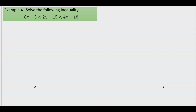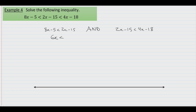Example number 4: solve the following inequality — 8x minus 5 is less than 2x minus 15, which is less than 4x minus 18. The value of x on the left side is different than that on the right side, so once again we'll split this into two separate inequalities: 8x minus 5 less than 2x minus 15, and 2x minus 15 less than 4x minus 18. Starting with the left inequality, we get 8x minus 2x less than negative 15 plus 5, giving us 6x less than negative 10. Dividing by 6, x has to be less than negative 5 thirds.